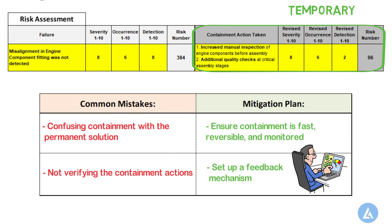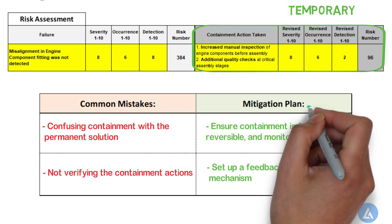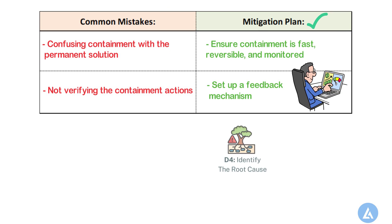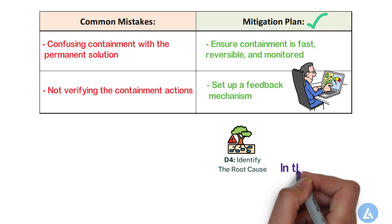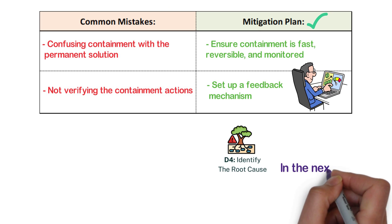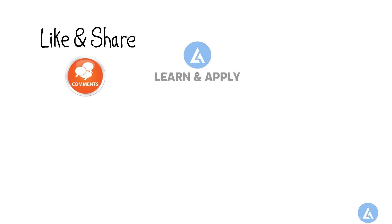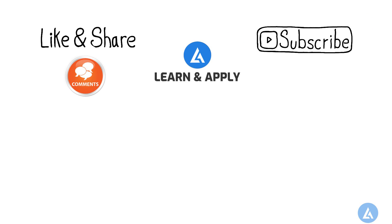Once we have implemented the interim containment action, we need to move to the next step, D4 — Identify Root Cause. Due to time constraints, we will continue learning the remaining steps of 8D in the next video. If you found this information useful, please do not forget to like, comment and subscribe. Thank you for your valuable time and see you in the next video.